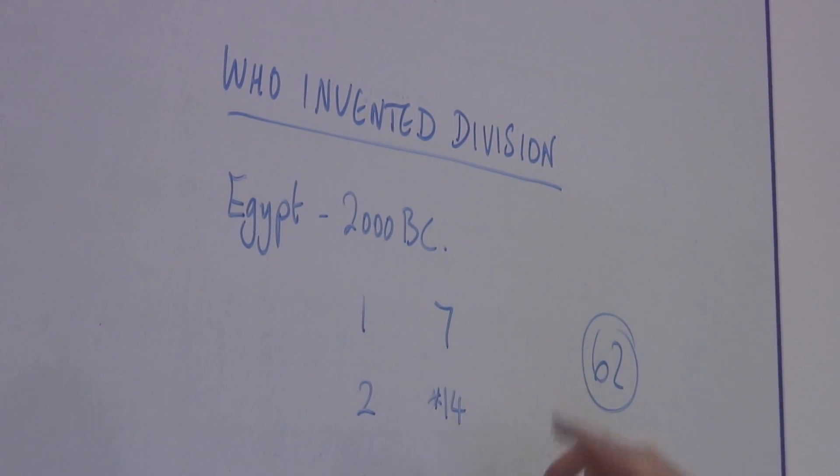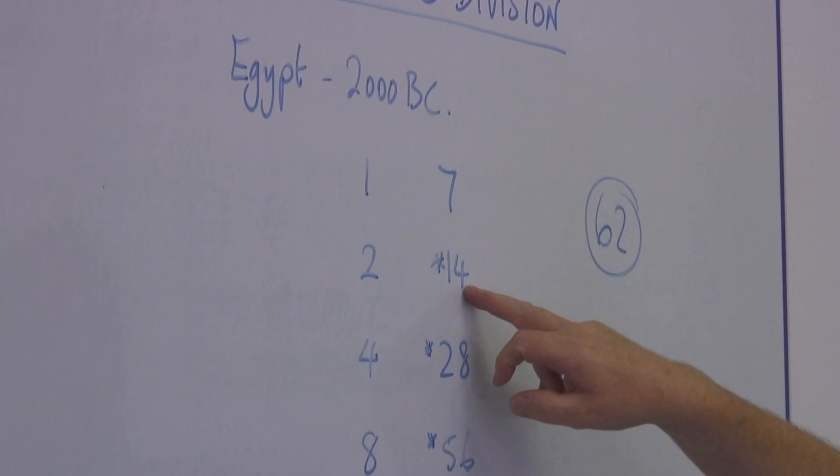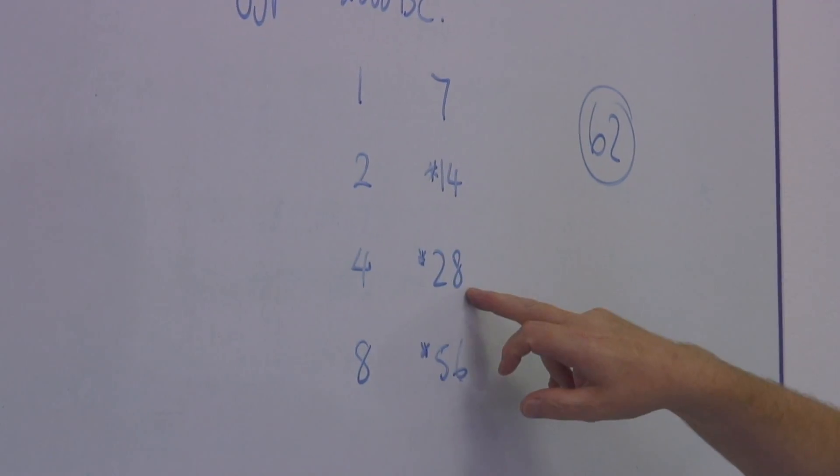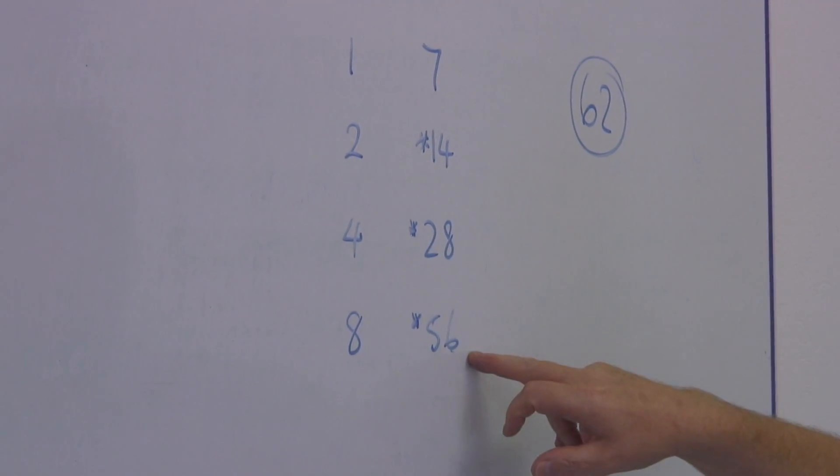One, seven. Seven, so it'll be doubled up it becomes fourteen, doubled up it becomes twenty-eight, doubled up it becomes fifty-six.